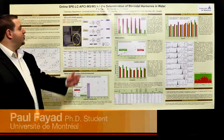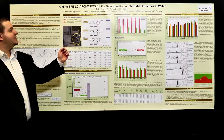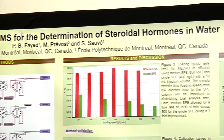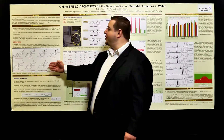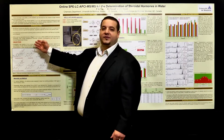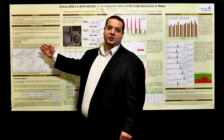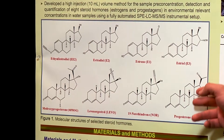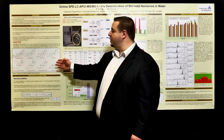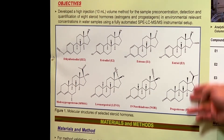Today I'll be presenting my poster on the online SPE-LC-APCI-MSMS method for determination of steroid hormones in water. These compounds are important because they have an effect on wildlife and human reproductive physiology. These are known impacts of endocrine-disrupting compounds. We have the structures of eight steroid hormones we'll be studying today in effluent wastewater — four estrogens and four progestogens.